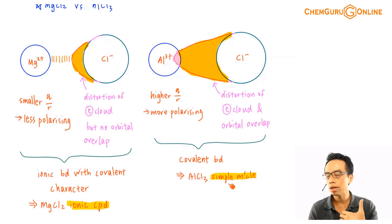So the issue just boils down to, in terms of the extent of the distortion of the electron cloud, whether there is orbital overlap or not. If there's pulling of electron but no orbital overlap, then this is ionic bond with covalent character. But if there's pulling of electron cloud until there's orbital overlap, then this is counted as a simple molecule.